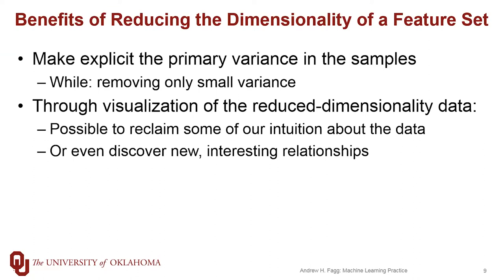Dimensionality reduction provides a variety of different advantages. One of the things we get out of it is that it makes very explicit the variance that we are seeing within the data set. You've done a lot of work already with building correlation plots between different features, and some features tend to be very correlated with one another. What we'd like to be able to do is explicitly capture those correlations in this dimensionality reduction process. We also have a human aspect here that can be advantageous: by reducing dimensionality from many dimensions down to a few, we have the ability to start to bring back our visualization tools that work so well in two, three, maybe four dimensions.